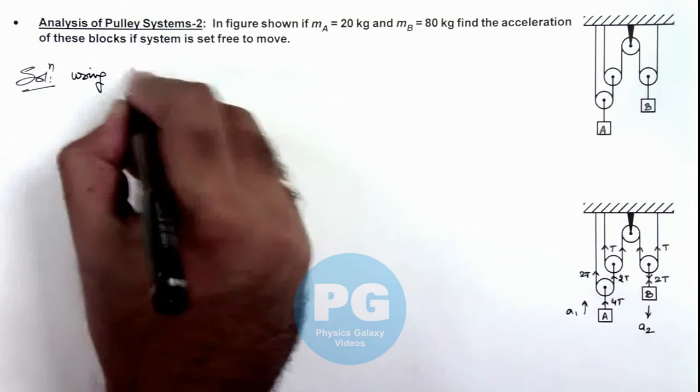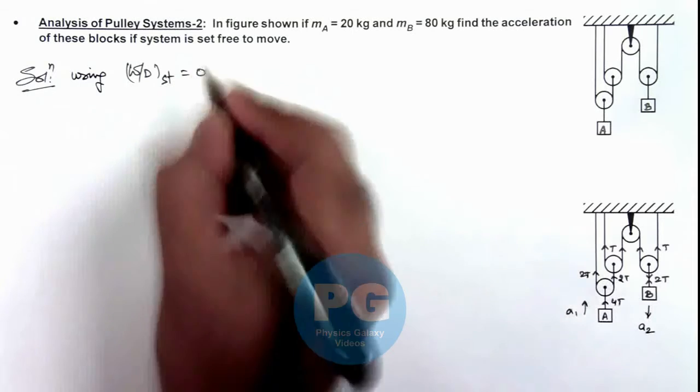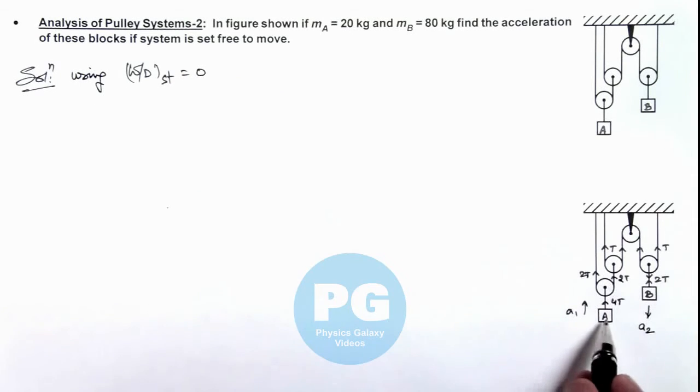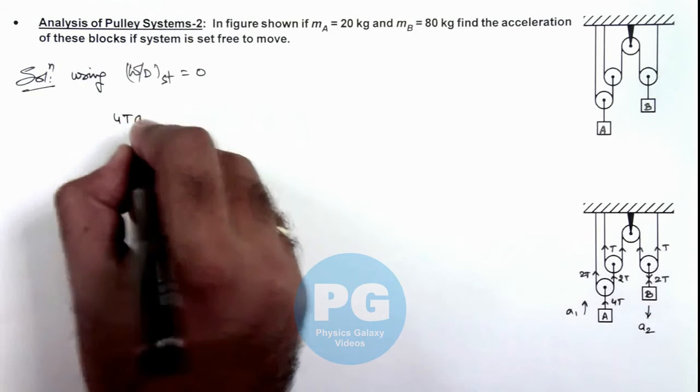Using work done by all strings to be equal to zero, here I can write on block A as it is going up, work done by the tension will be 4T multiplied by its displacement which will be proportional to a₁. So for this we can write the work done will be 4T multiplied by a₁.